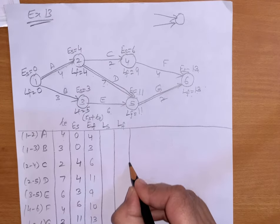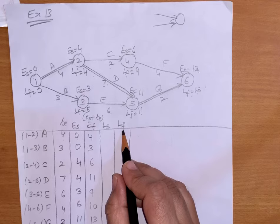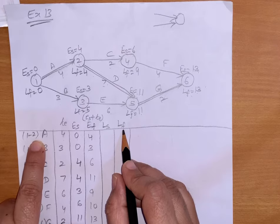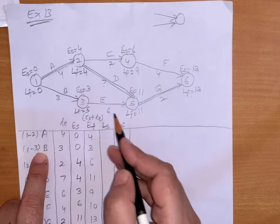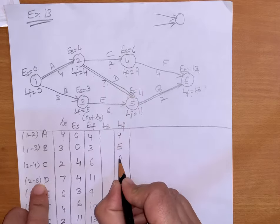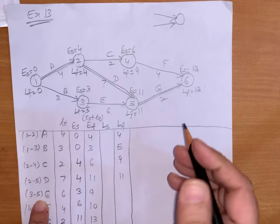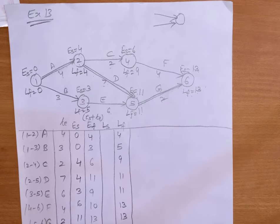Now, how to record in the PERT table: latest finish is recorded for the end event. For activity ending at event 2, latest finish was 4. For event 3, latest finish was 5. For event 4, latest finish is 9. For event 5, latest finish is 11, and again 11. For event 6, latest finish is 13, and again 13.